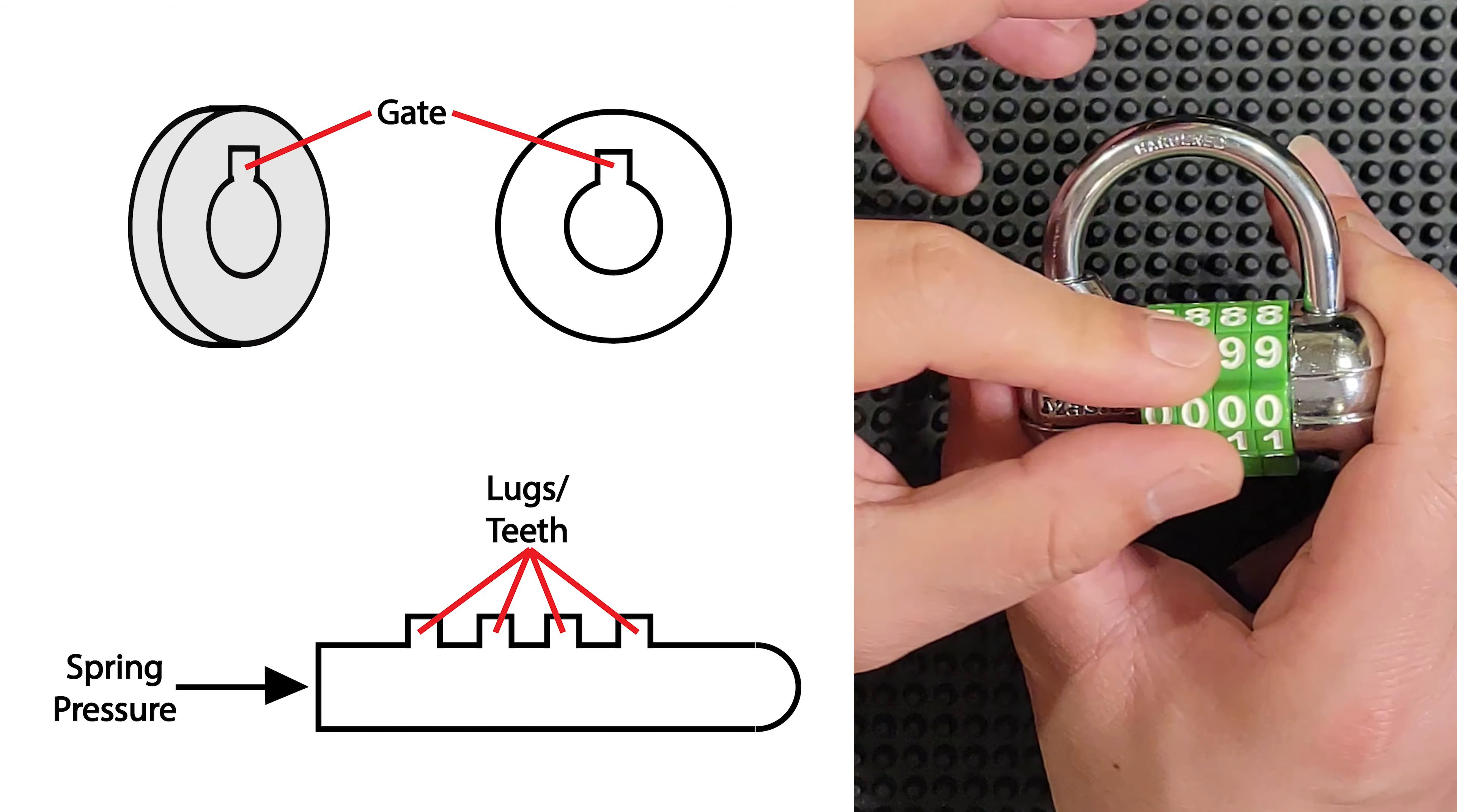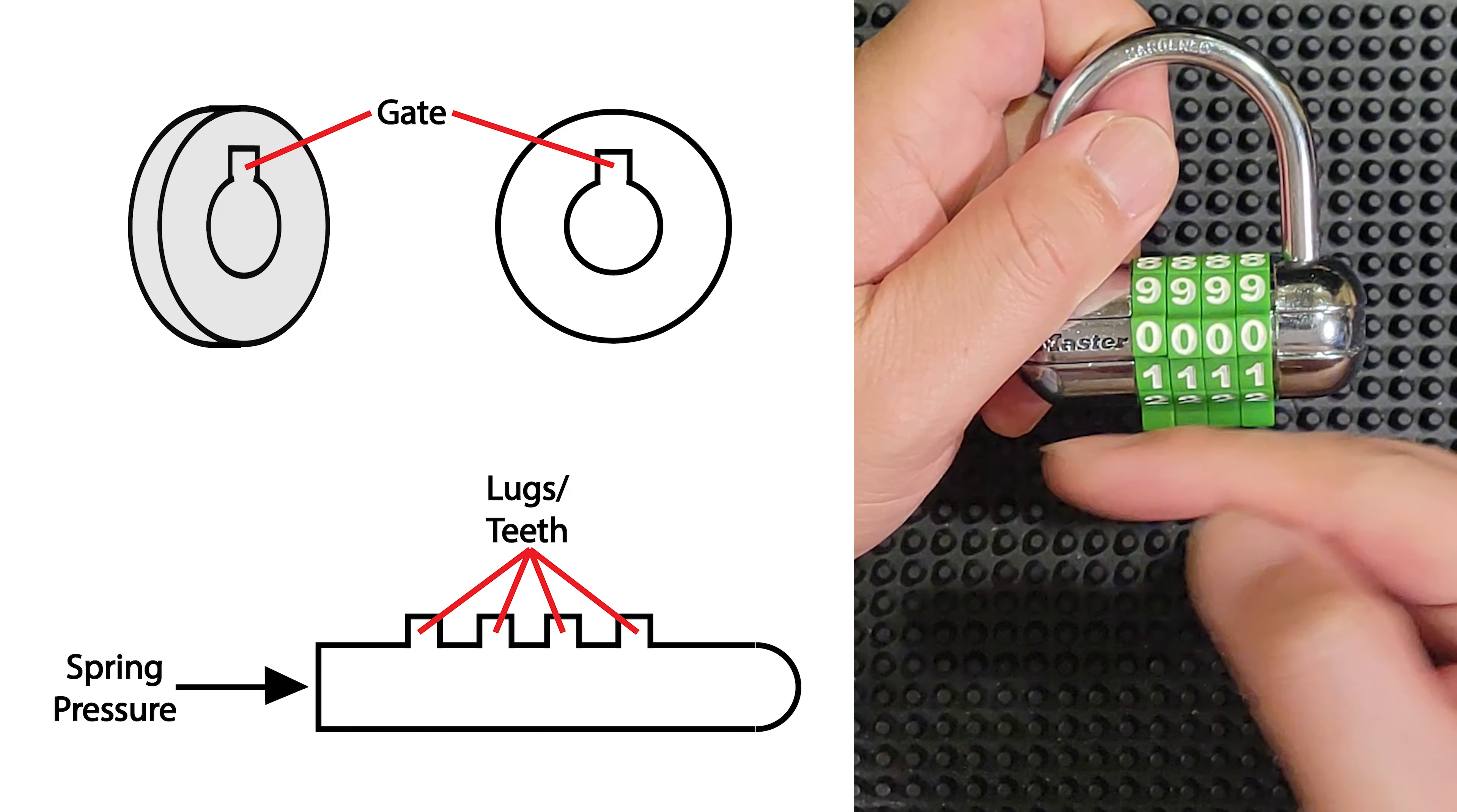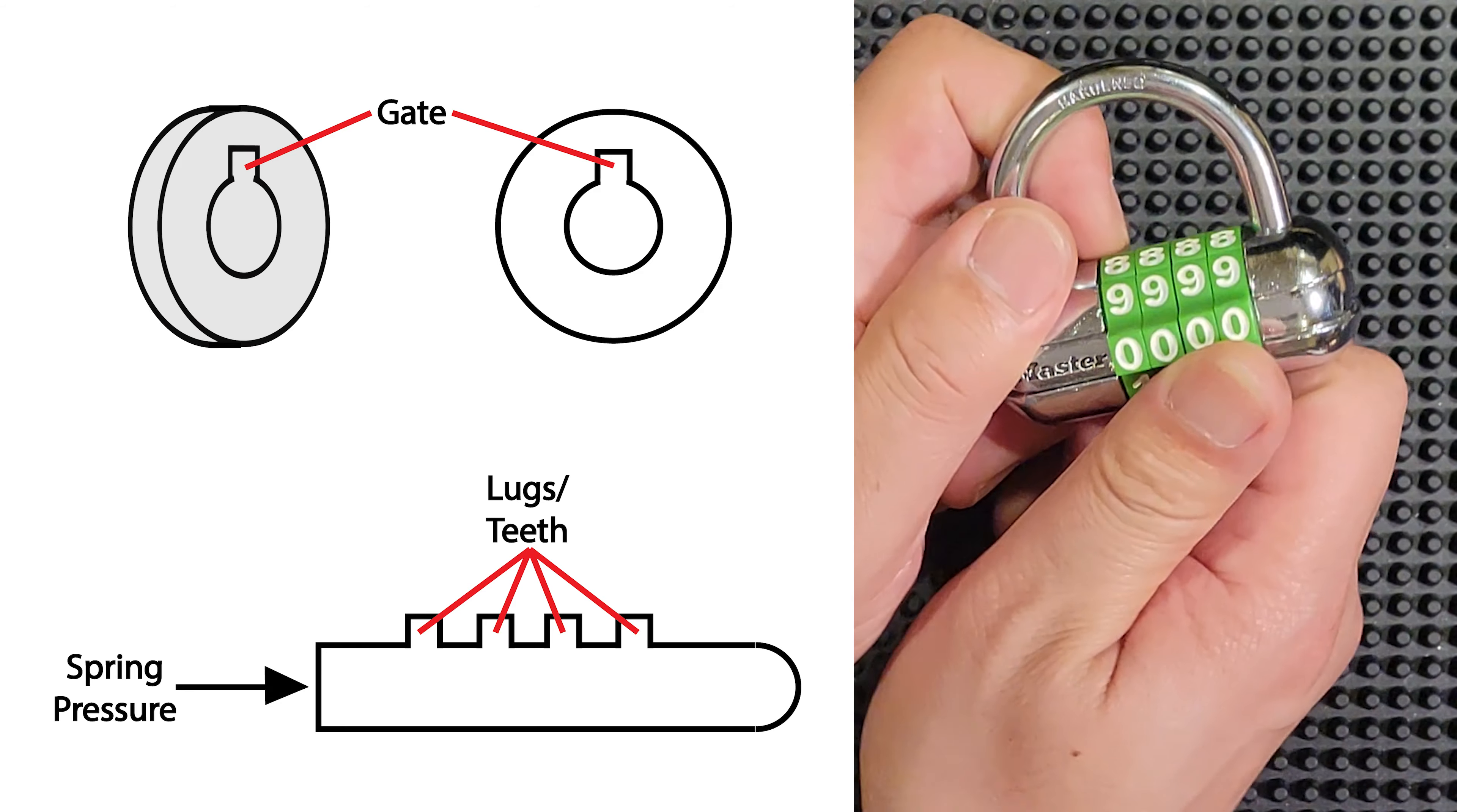It has a spring on the other side that kind of forces the rod into the locked position. And then, if the proper combination is set, and all of the gates are aligned with the lugs or the teeth on the shaft that you can see in the diagram. If the gates and the lugs line up, then when you pull the shackle, it pushes that rod out of the way, allowing the shackle to open. And then the spring just pushes it back into the locked position, so that when you close the shackle, it does the same thing in reverse.